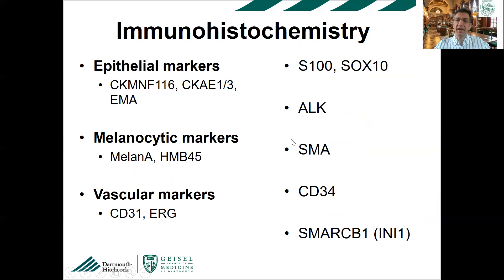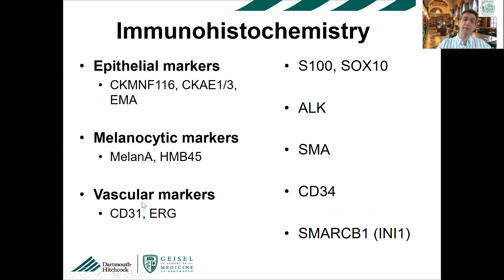You don't need a lot of immunohistochemical stains in cutaneous mesenchymal pathology to make an accurate diagnosis. You don't need a gazillion stains, but you need some to exclude different lineages. Epithelial markers play an important role — I use CKAE1/AE3 and MNF116, which covers more keratins than CKA1A3. EMA of course. More specific melanocytic markers: MelanA and HMB45. Vascular markers — always use two: CD31 and ERG. S100 and SOX10 for neuroectodermal and melanocytic. Also useful: ALK, SMA, CD34, and IA1.